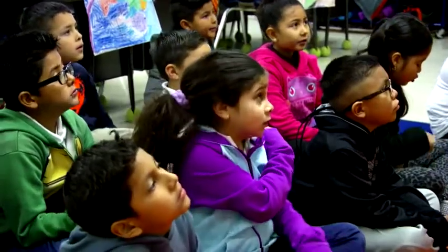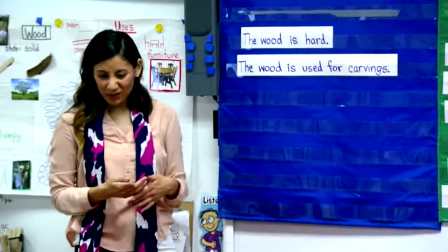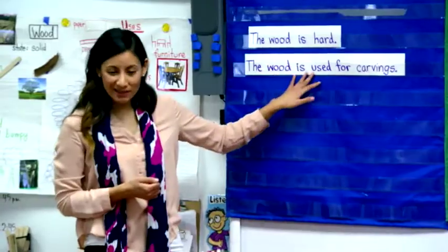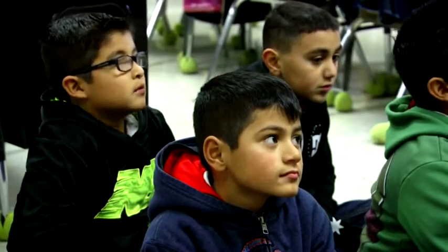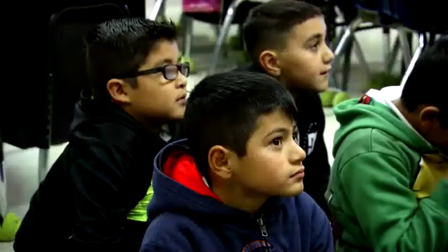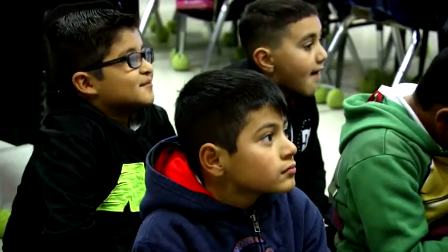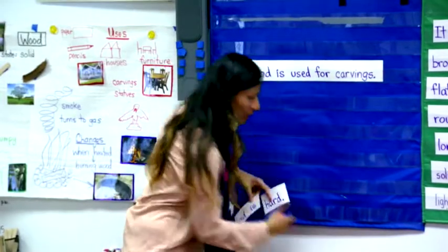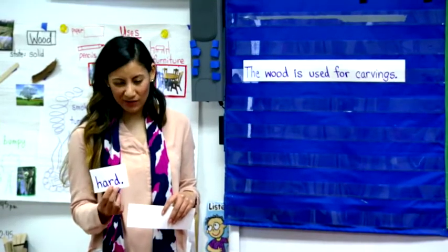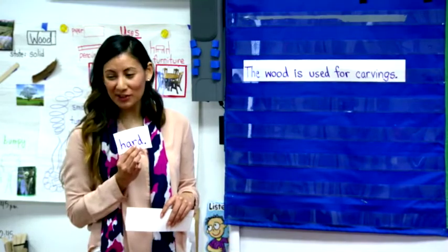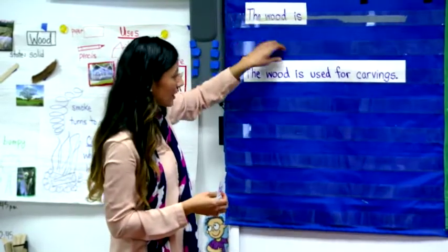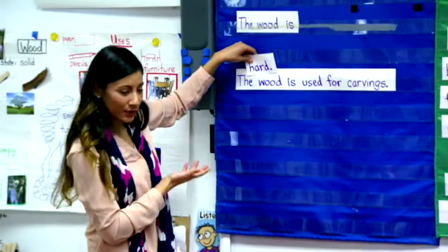The wood is used for carvings. If I kept going, it would get kind of boring — if I continue to say 'the wood is, the wood is,' especially if I was speaking or writing. So I'm going to show you how I can take these two sentences and condense them into one. I'm going to take off the adjective — we know now that the adjective goes before the noun in English. So I'm going to squeeze it into our second sentence.